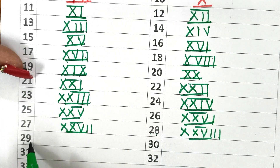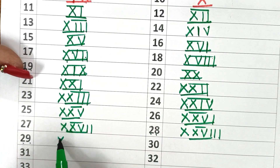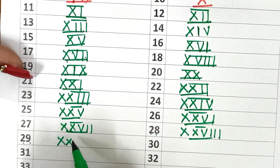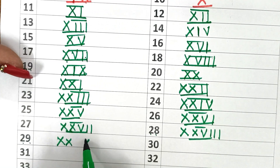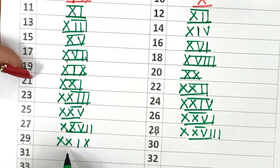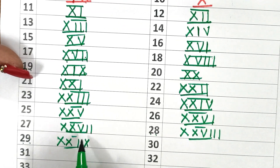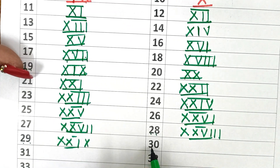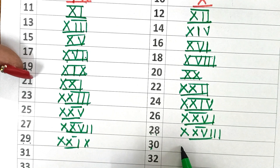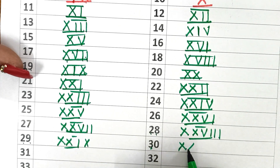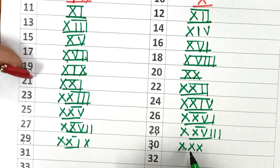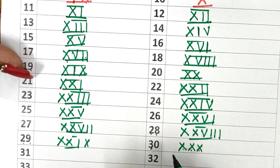Now 29: so how do we write 29? 20 and then 9, so 10 then minus 1 — XXIX. Now 30: 30 is 10, 10, and 10 — this is XXX. 10 plus 10 plus 10 is 30.